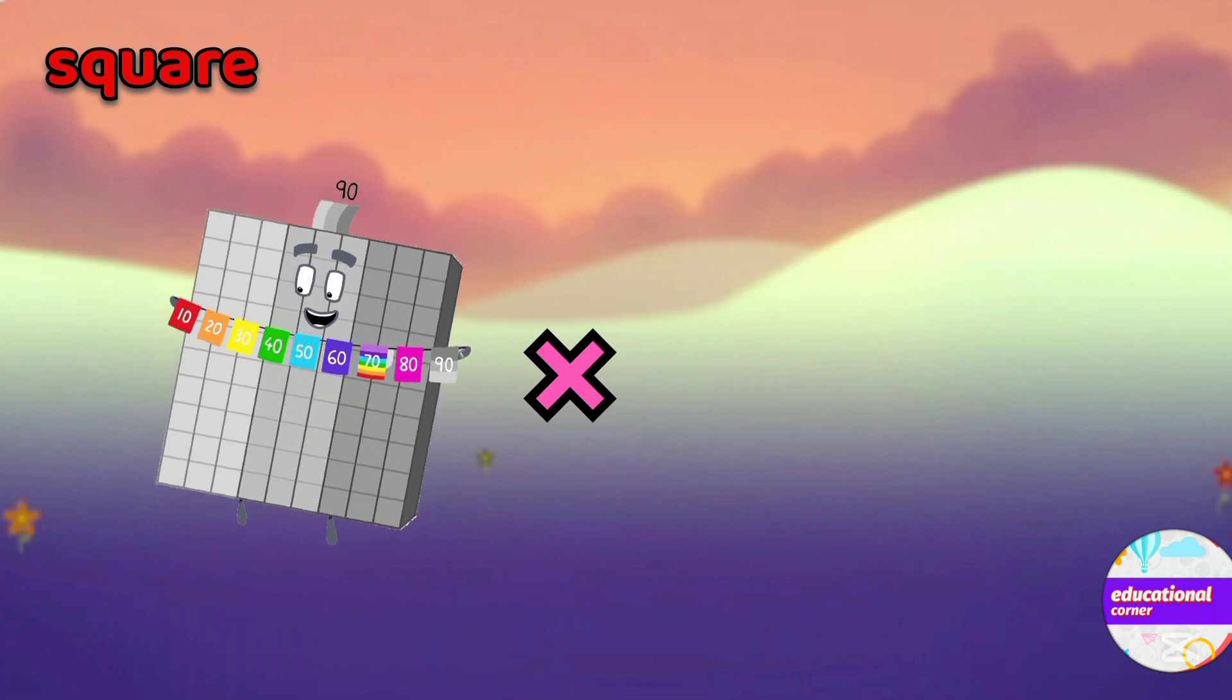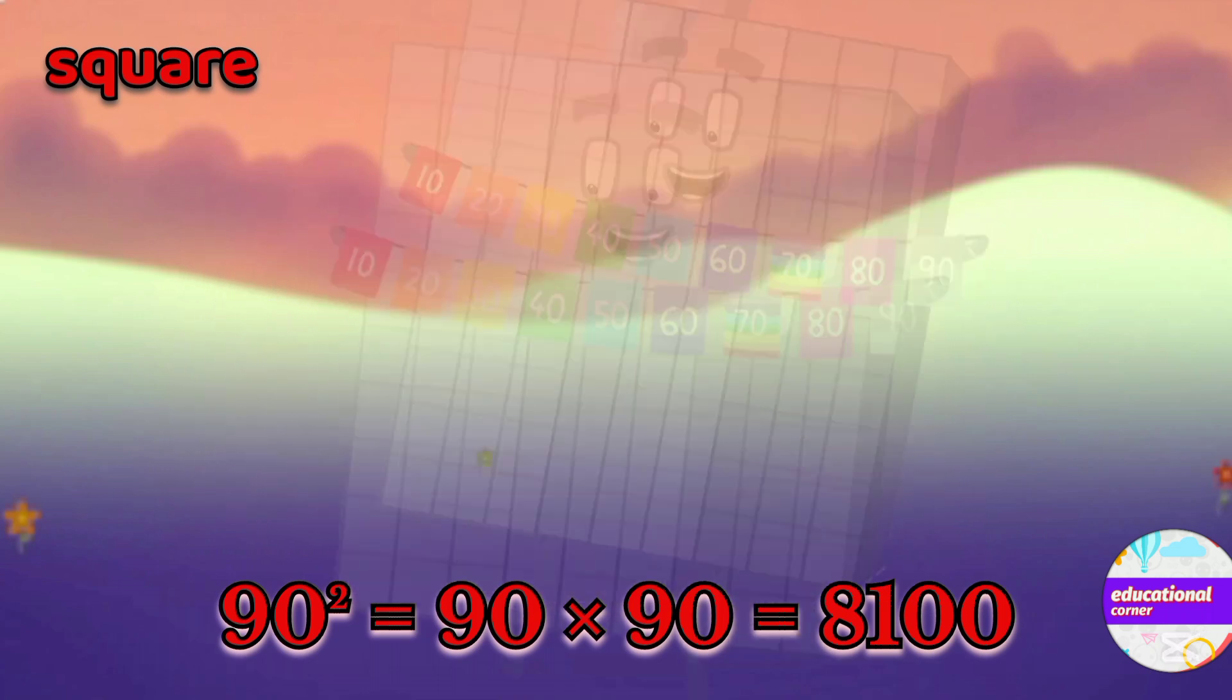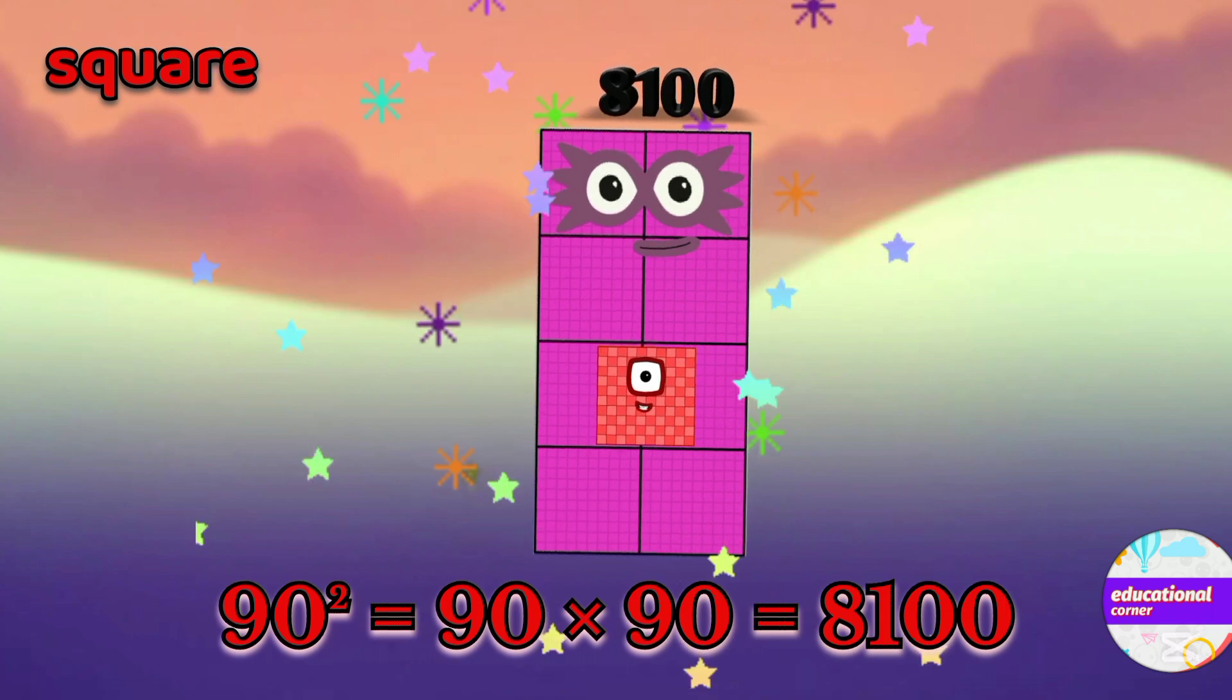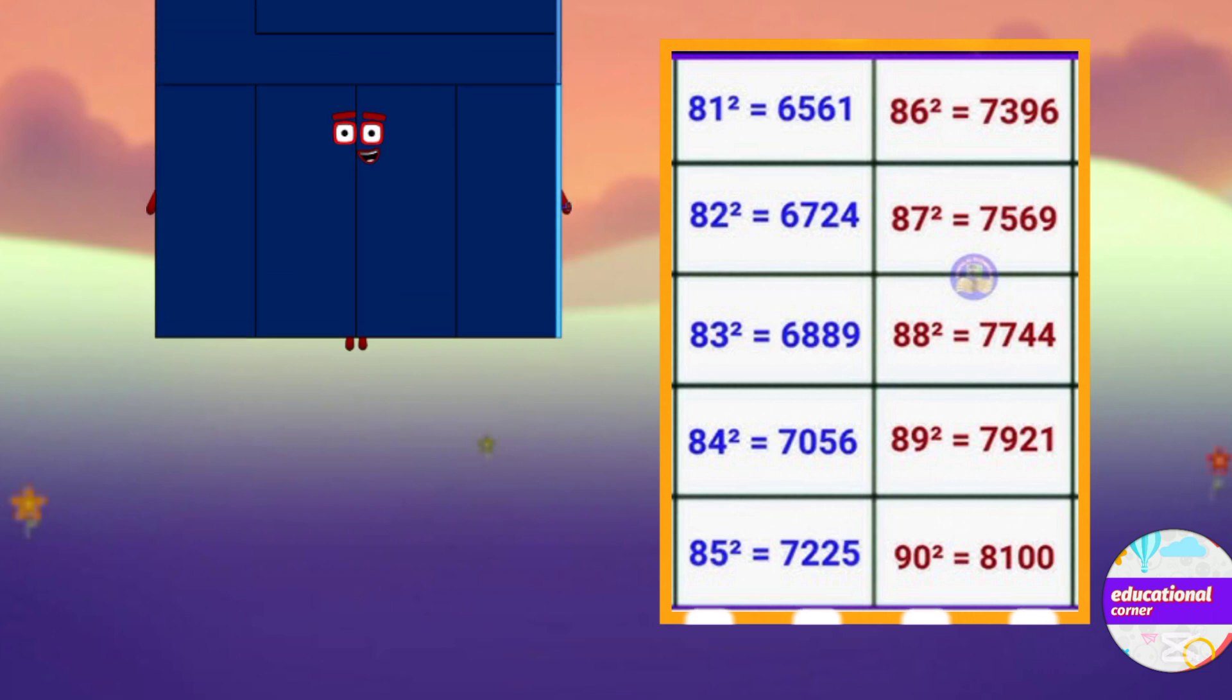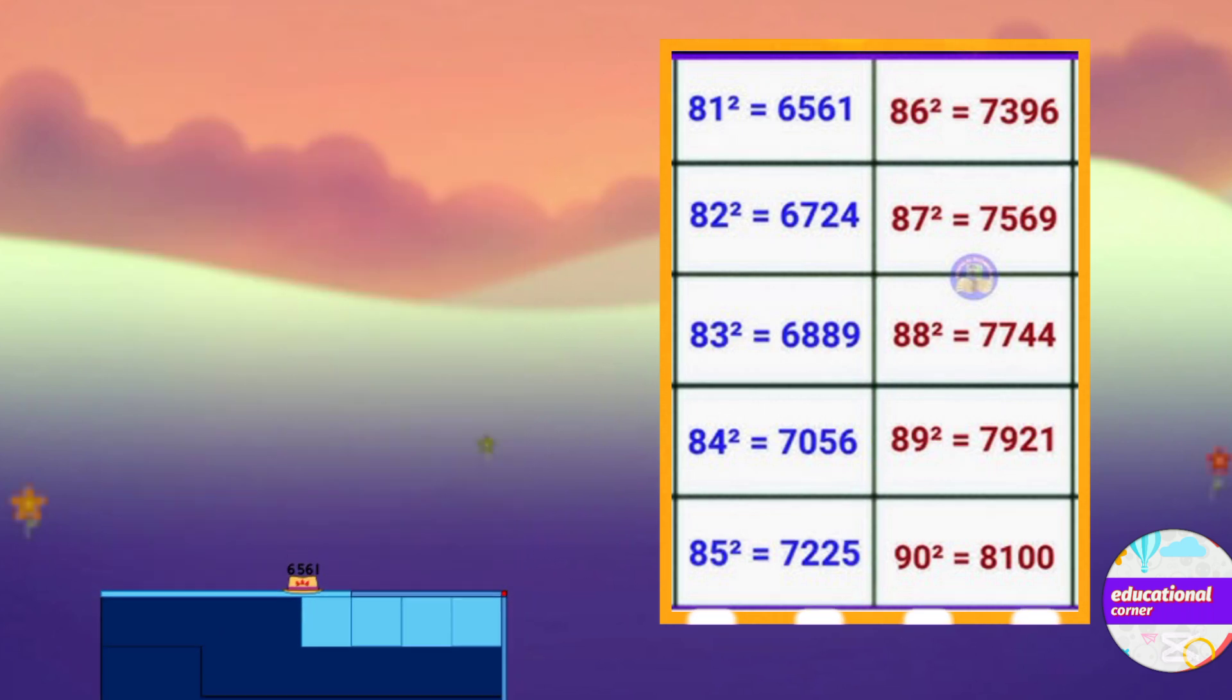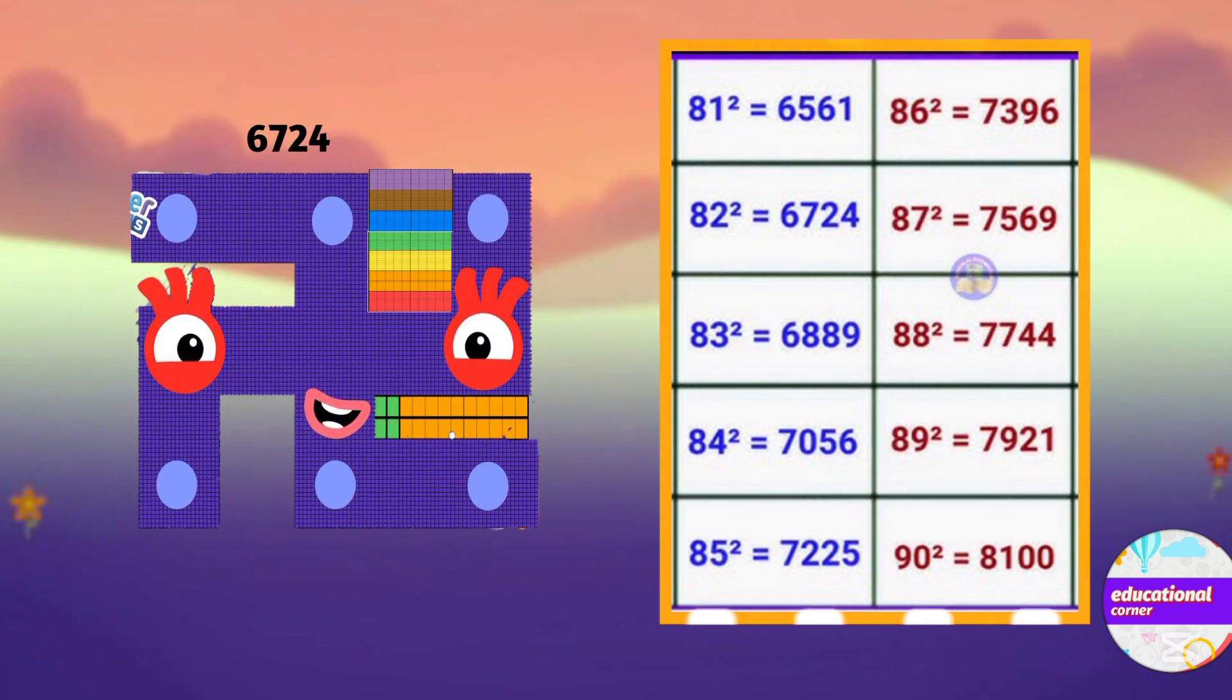90 multiply by 90. So the square of 90 is 8100. Let's repeat: square of 81 is 6561, square of 82 is 6724.